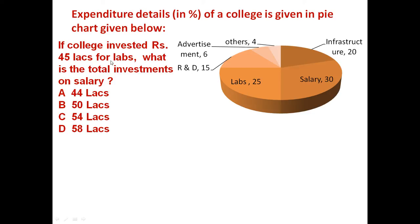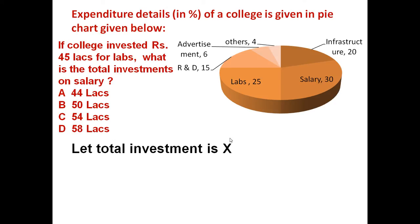45 lakhs is the investment for labs. If you see, for labs, 25% investment is there. But the problem says 45 lakhs are invested on labs. So if we assume the total investment by the college is Rs. X, then 25% of X is equal to 45 lakhs, because 45 lakhs are invested for labs.